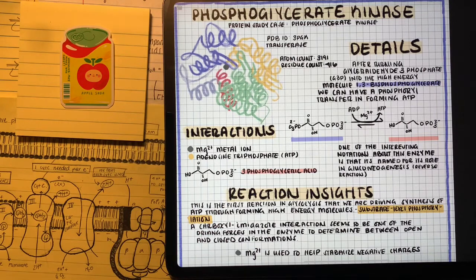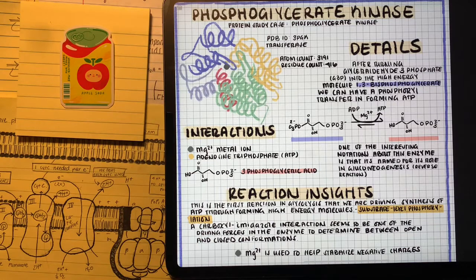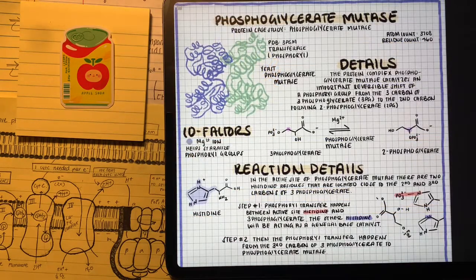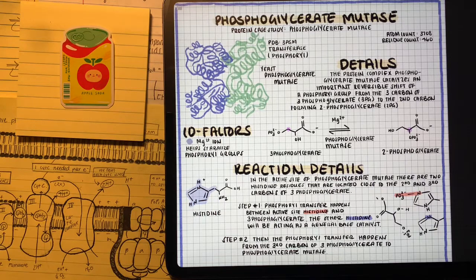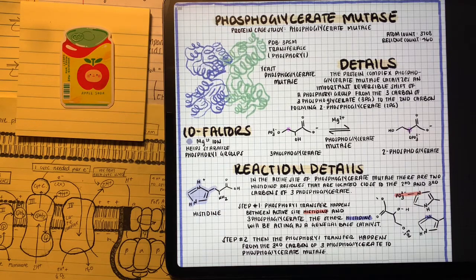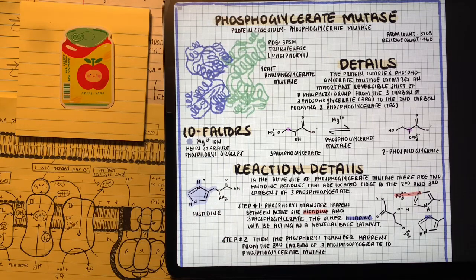So this is the reason why we've been creating these high-energy molecules. Phosphoglycerate kinase is going to take 1,3-bisphosphoglycerate to form 3-phosphoglycerate. Now that we did our first example of substrate-level phosphorylation, I want you to think that the rest of glycolysis is going to be to set up the second substrate-level phosphorylation.